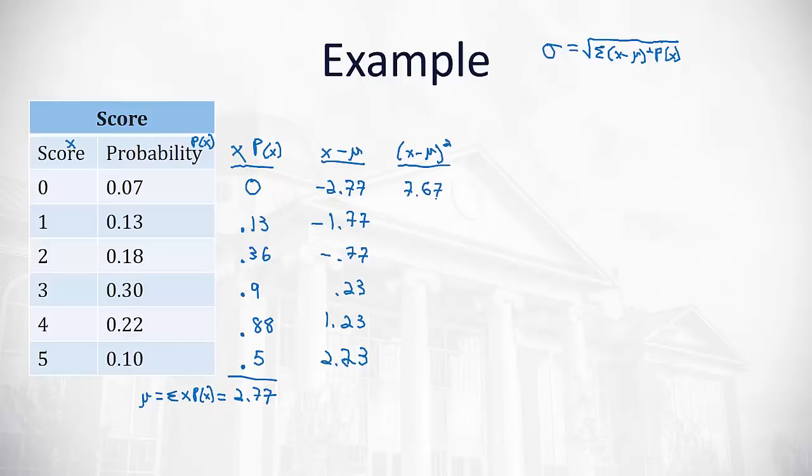0.77 squared is 0.59, 0.23 squared is 0.05, 1.23 squared is 1.51, and 2.23 squared is 4.97.